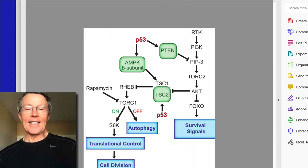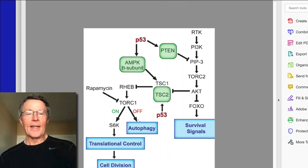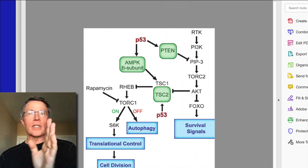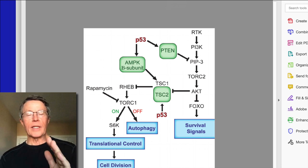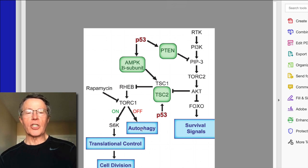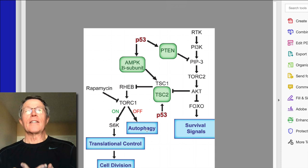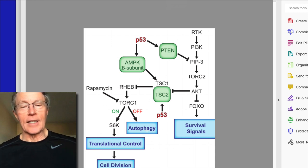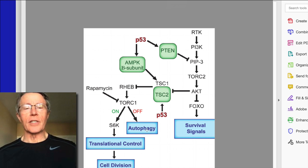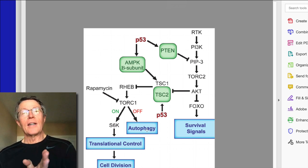I do want to cover this one item. TORC1 is a major shunting or decision point in the pathway of going between autophagy and translational control or cell division. Autophagy — you're beginning to see this a lot on the internet. People are getting interested in this concept and it has to do with fasting. Break it down: auto meaning self, phage meaning to eat.